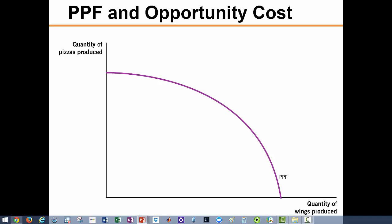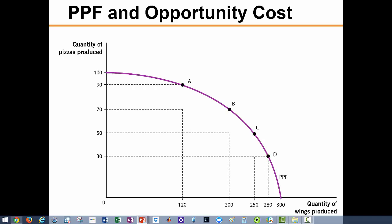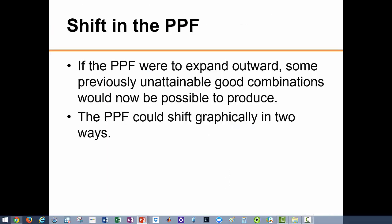This graph here represents what a more realistic PPF should look like. Starting at point D, we are efficiently producing 30 units of pizza and 280 units of wings. To produce 20 extra pizzas — moving from point D to point C — society gives up 30 units of wings. To increase pizza production by another 20 units, moving from point C to point B, the loss is 50 wings. Continuing further and increasing pizza by another 20 units, we see the loss grows to 80 units of wings. This explains the idea of increasing opportunity costs.